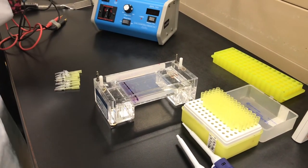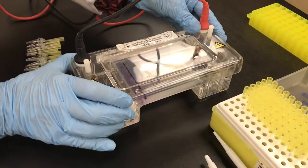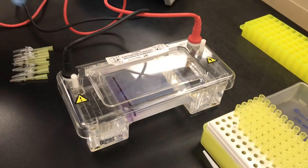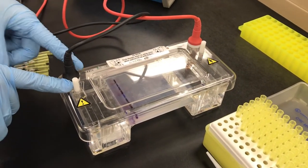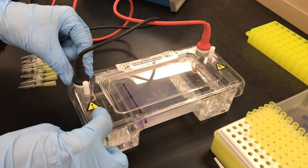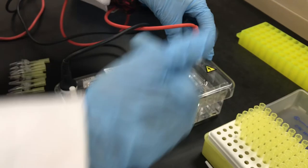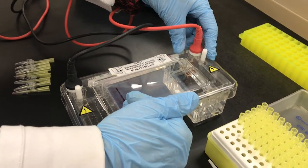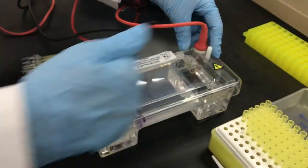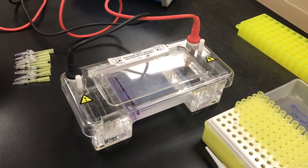Now, to run the gel, I'm going to put the lid on, which is going to make the proper connections. We want to have the anode at the end closest to the wells, cathode far away. DNA has the net negative charge, so once we plug this in and we have current, the DNA is going to move toward the cathode.